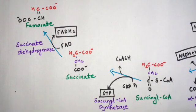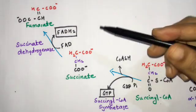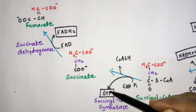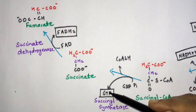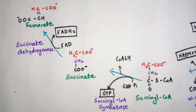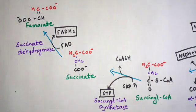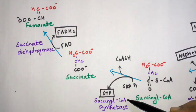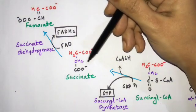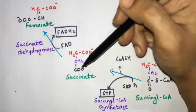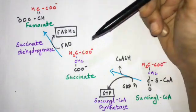In the fifth step, succinyl coenzyme A is converted to succinate. In this process, GDP + Pi is converted to GTP, so energy is generated. This is a substrate-level phosphorylation reaction, catalyzed by succinyl coenzyme A synthetase, forming succinate.